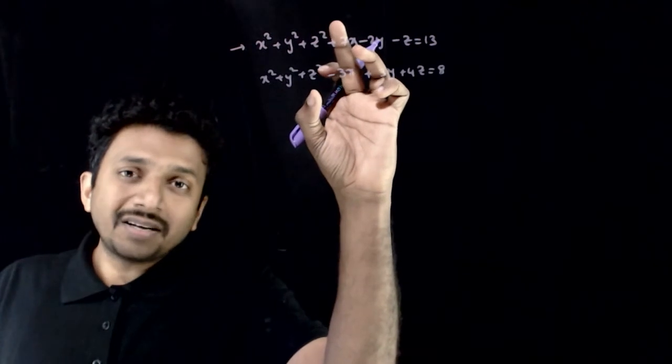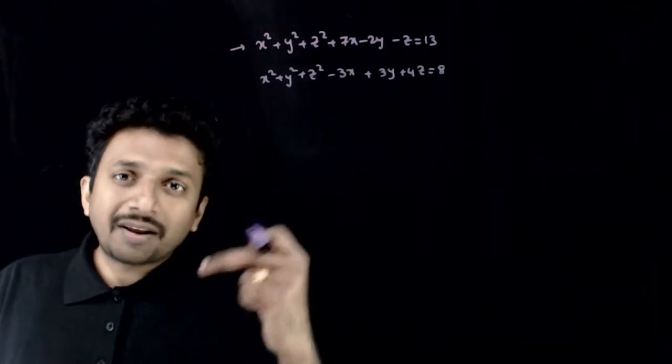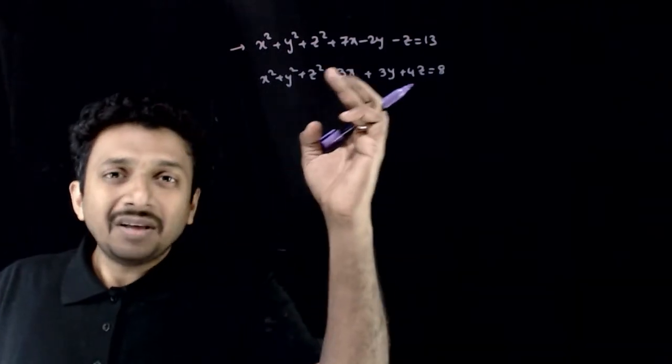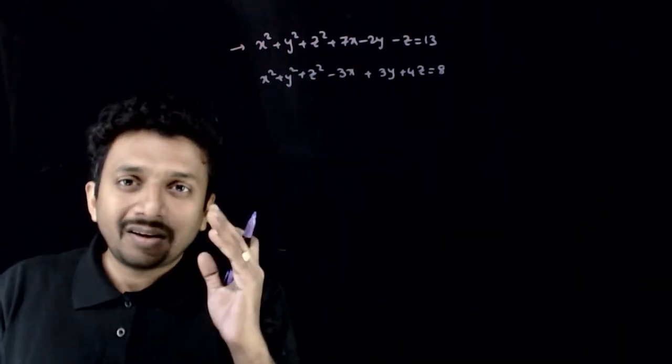These two planes intersect along a circular cross section. What is the plane which also has the same cross-sectional intersection?